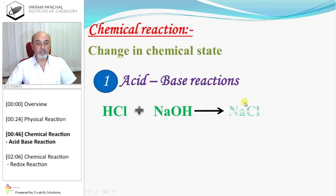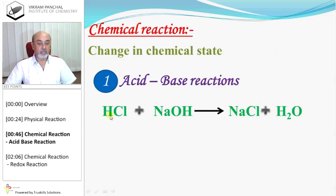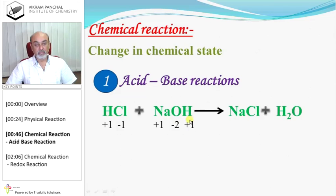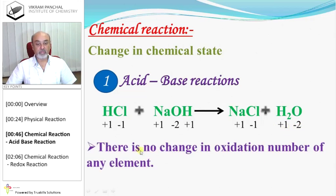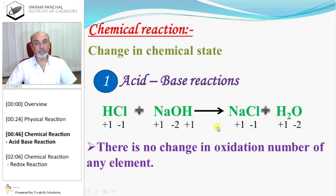Acid-Base Reaction. This is the example of acid-base reaction: HCl reacts with NaOH to give NaCl and H2O. What is the oxidation number of each element? In HCl, hydrogen is +1 and Cl is -1. In NaOH, sodium is +1, oxygen is -2, and hydrogen is +1. In NaCl, sodium is +1 and Cl is -1. In H2O, hydrogen is +1 and oxygen is -2. There is no change in oxidation number of any element. In acid-base reactions, there is no change in oxidation number because electron transfer never takes place.